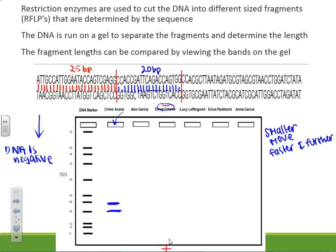If you look at the DNA marker as kind of like the y-axis of a graph, the smaller numbers are down here and the larger numbers are up here. A smaller DNA fragment moves faster through the gel; if it's larger, it's going to be harder for it to move. Larger fragments move slower and not as far. The gel tells us not the sequence of DNA, but the number of fragments, the number of RFLPs, and about how large those fragments are.